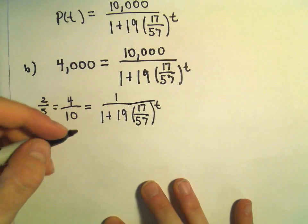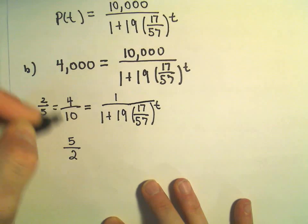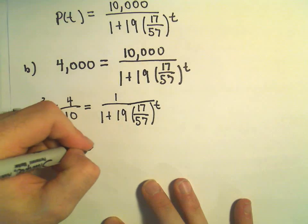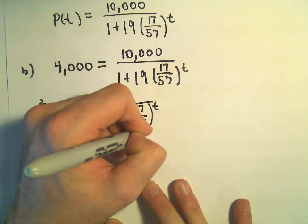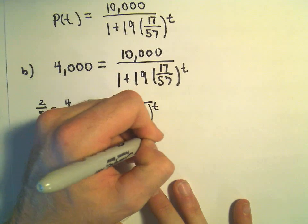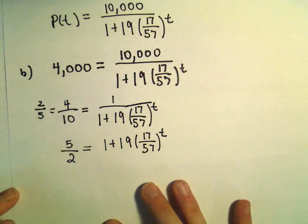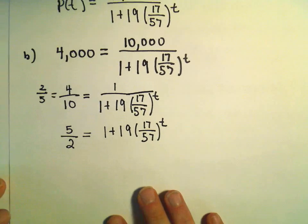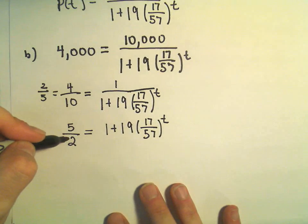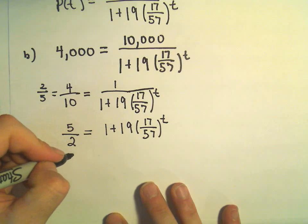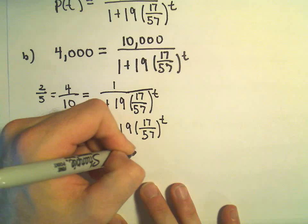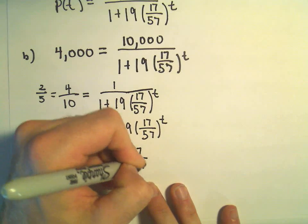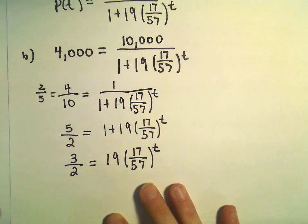And now I'm just going to take the left side and flip it, so that'll become 5 halves. If we take the right side and flip it, we'll just get 1 plus 19 times 17 over 57 raised to the t. We can subtract 1 from both sides, so 5 halves, 2.5 minus 1 will give us 3 halves equals 19 times 17 over 57 raised to the t power.